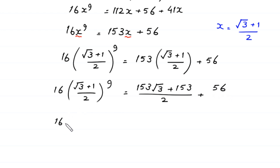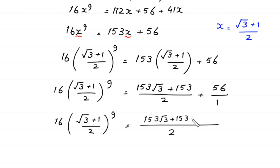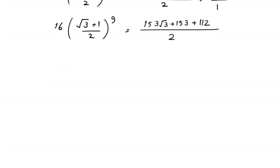Next, taking the LCM of 1 and 2, which is 2, we get 16 times (square root of 3 plus 1 over 2) to the power 9 equals 153 times square root of 3 plus 153 plus 2 times 56 (which is 112), all over 2. This gives 153 times square root of 3 plus 265, over 2.